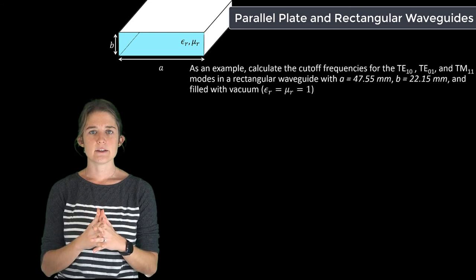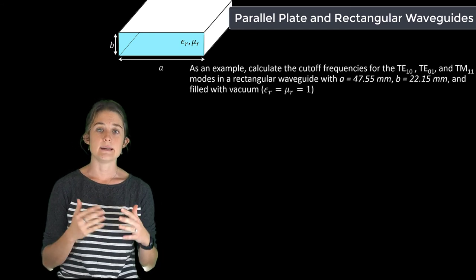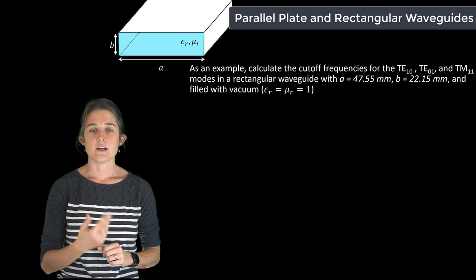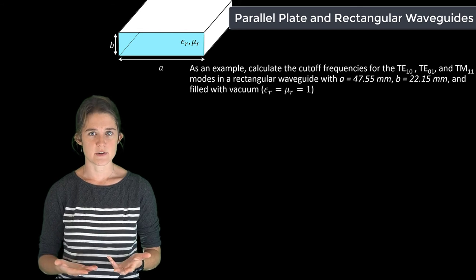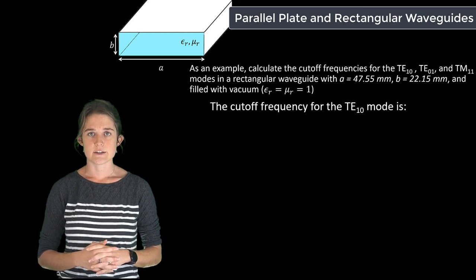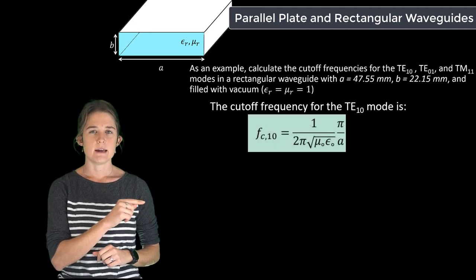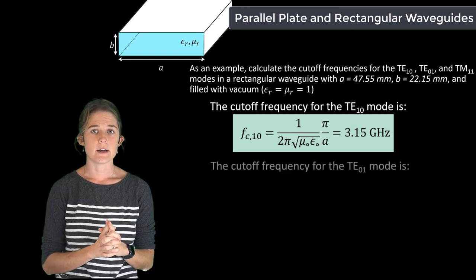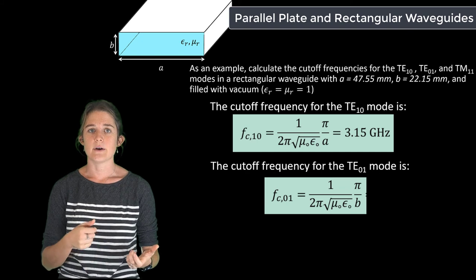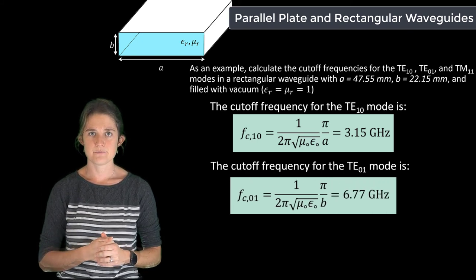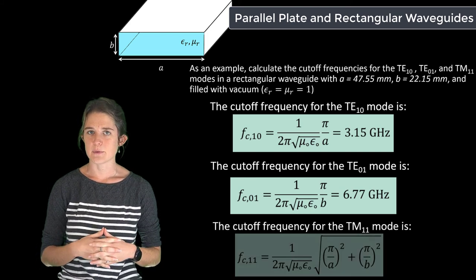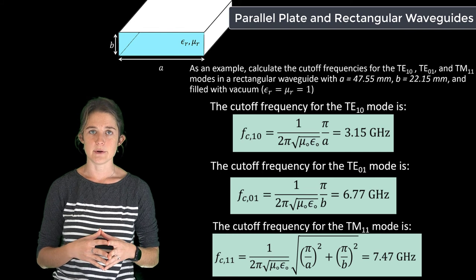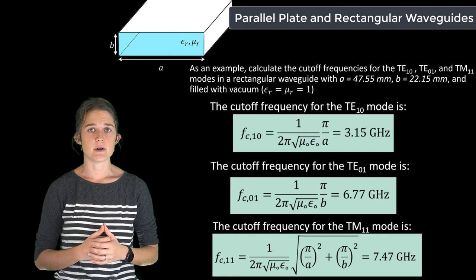As an example, consider calculating the cutoff frequencies for the TE10, TE01, and TM11 modes in a free-space filled rectangular waveguide where a equals 47.55 millimeters and b equals 22.15 millimeters — the dimensions for a WR187 waveguide. The dominant TE10 mode cutoff frequency is 3.15 gigahertz. The TE01 cutoff, with m equals 0 and n equals 1, is 6.77 gigahertz. The TM11 mode, with both m and n equal to 1, has a cutoff frequency of 7.47 gigahertz. Note that the TE11 mode will also begin to propagate at this frequency.